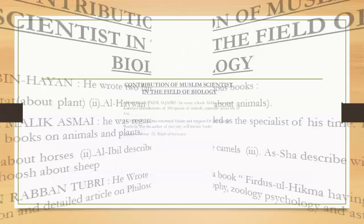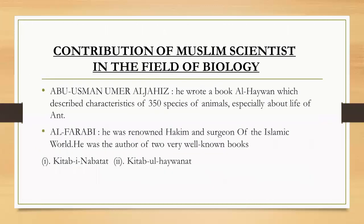Now come to Abu Usman Umar Al-Jahiz. He wrote a notable contribution in which he explained the characteristics of about 350 species of animals. He wrote on the life of animals with especially interesting topics.